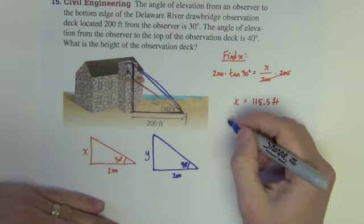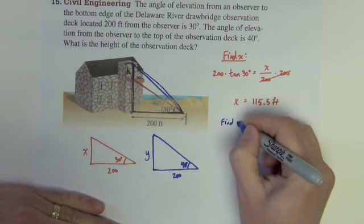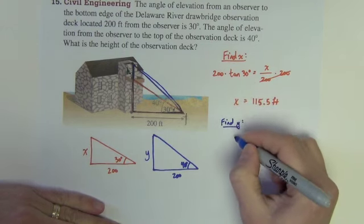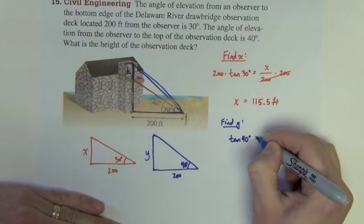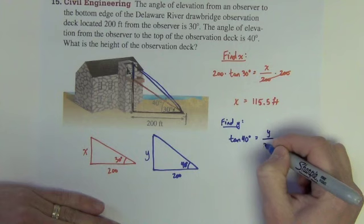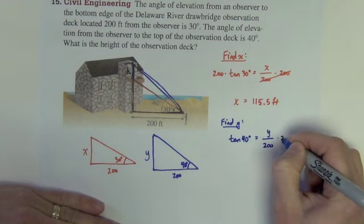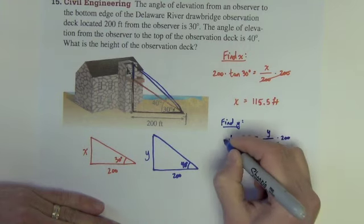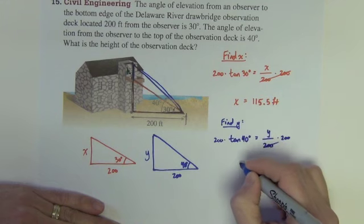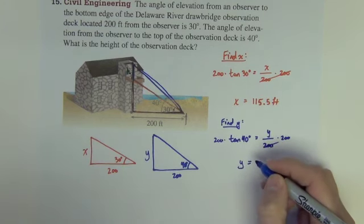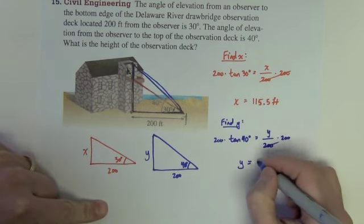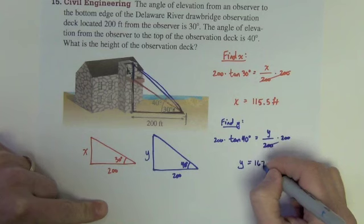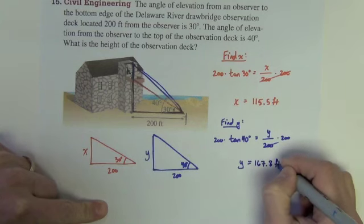Okay, so now we want to find y. Similar setup. It will be tan of 40 degrees equals opposite over adjacent. Let's multiply the 200 out of the denominator. So we get y equals 167.8 feet.